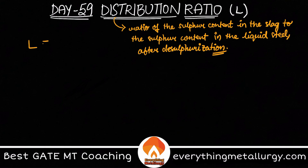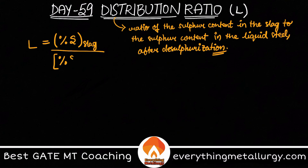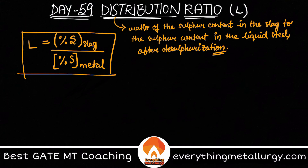The distribution ratio tells you how effectively sulfur is partitioning — that is, redistributing from the liquid steel into the slag. It tells you how good your sulfur removal is. It can be written as L = (%S) in slag divided by [%S] in metal. A high L value is desirable because it means less sulfur remains in steel and more sulfur has gone into the slag, indicating a very good desulfurization process.